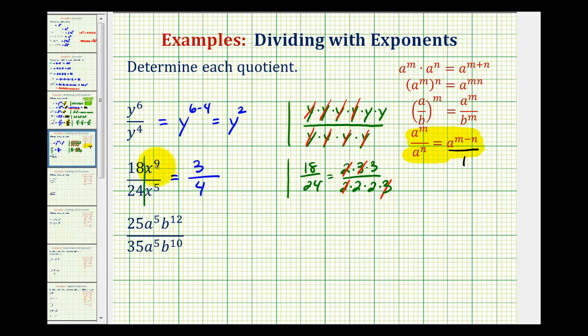And then we have x to the ninth divided by x to the fifth. So we subtract the exponents. Nine minus five is four, so we'd have x to the fourth. As I mentioned before, it would be in the numerator.